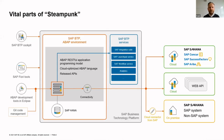Looking at the main building blocks: in the center of the picture is the Steampunk system — ABAP stack plus HANA database. The key aspects of the ABAP stack are the RAP programming model, the cloud-optimized ABAP language, and the use of released APIs. On the right-hand side are options to connect to other systems, mainly ERP core systems. On the left-hand side are toolsets for different roles: administrators use the BTP cockpit, SAP Fiori tools are used for UI development, and Eclipse-based ABAP Development Tools are used for ABAP development.